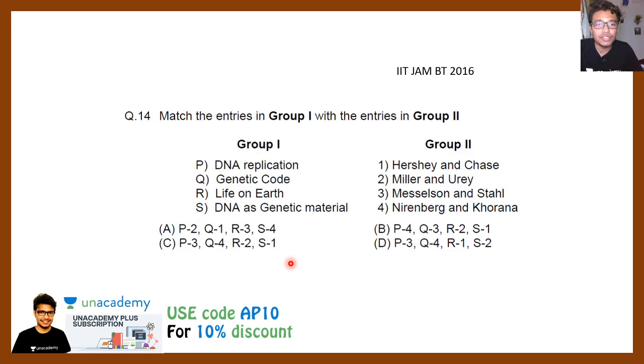Then there is another question: Match the entries in group one with group two. DNA replication - Hershey-Chase, genetic code - Urey-Miller, then Life on Earth - Meselson-Stahl, DNA genetic material - Nirenberg and Khorana. This is an important question, and if you arrange it properly, option C would be correct. For example, Nirenberg and Khorana did the genetic code work. Life on Earth was examined in artificial situation based on Urey-Miller's experiment. We know that DNA replication happened with Meselson and Stahl's experiments. So these kind of basic understanding is really important and they had asked questions on that.